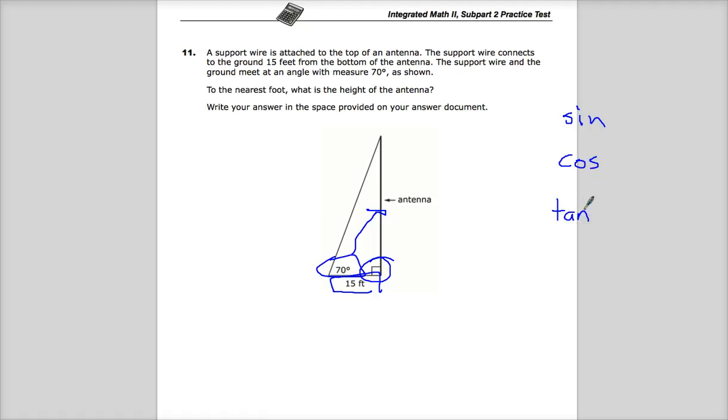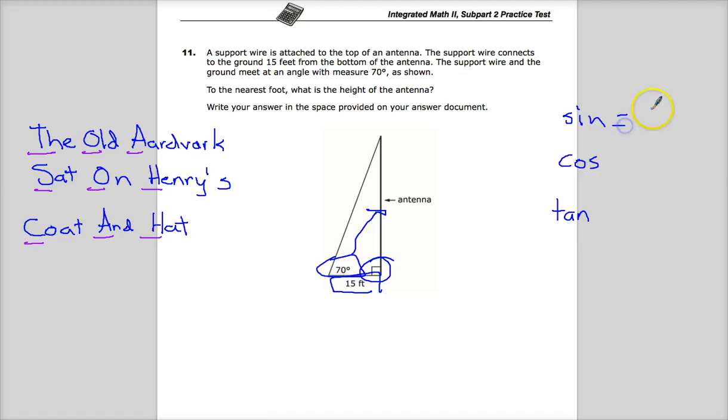Now years ago when I was in school they taught me that the old aardvark sat on Henry's coat and hat, which helped me figure out that sine is opposite over hypotenuse, cosine is adjacent over hypotenuse, and tangent is opposite over adjacent.